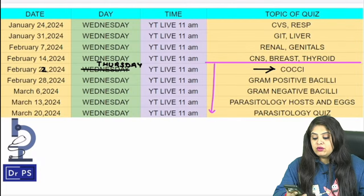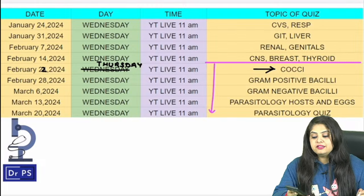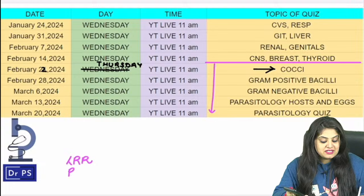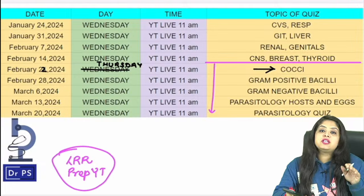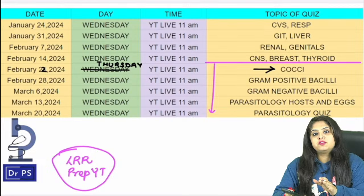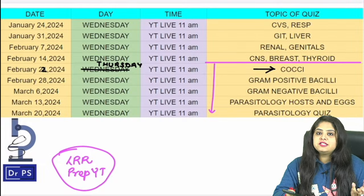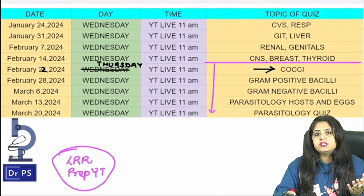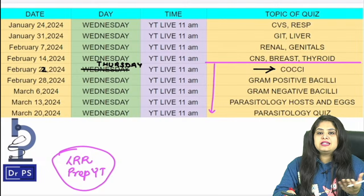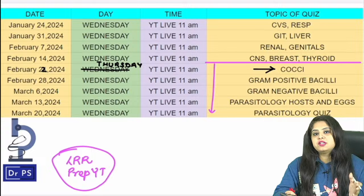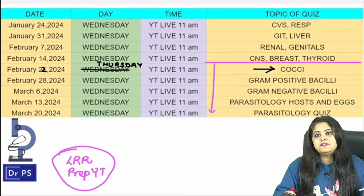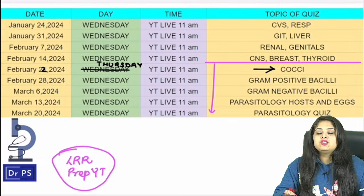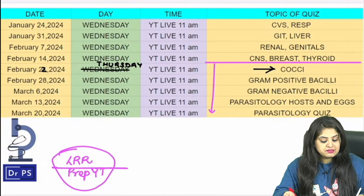Regarding LRR — since many of you have been asking — LRR will be conducted on the Prep Ladders YouTube channel with separate sessions for INI, NEET, and FMG. The earliest exam is INICET, and the schedule will be given in approximately a week's time. Tentatively it will start on March 25th, and for pathology and microbiology, the LRR will start the first week of April.